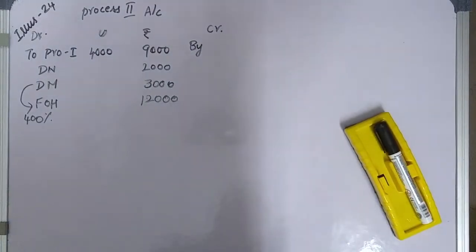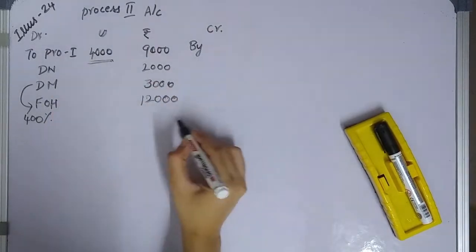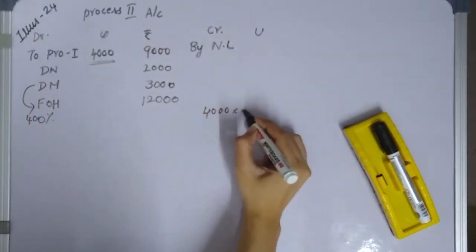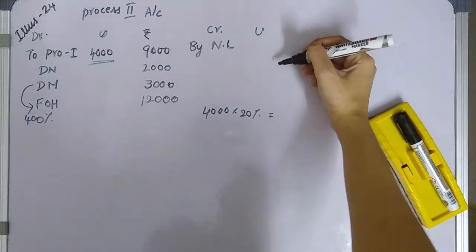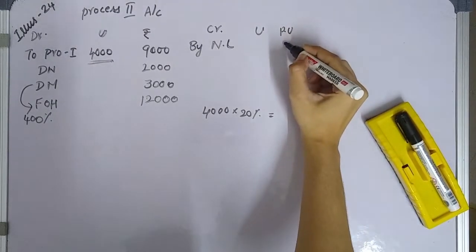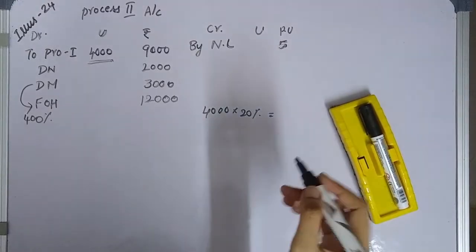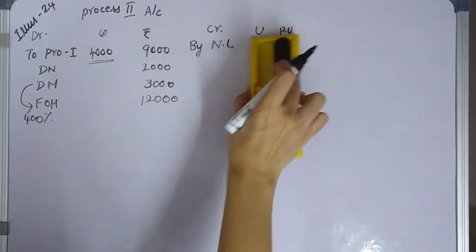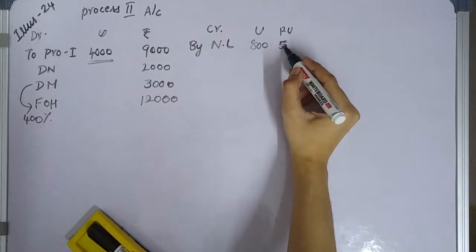Next, normal loss: the question states 20% of units worked. Units worked equal 4,000 units. So normal loss is 20% of 4,000, which equals 800 units. The scrap value is 5 rupees per unit, so 800 units multiplied by 5 rupees gives us 4,000 rupees for normal loss.